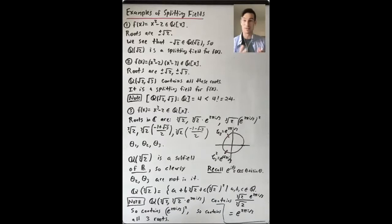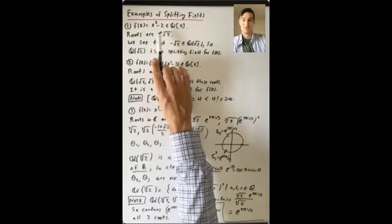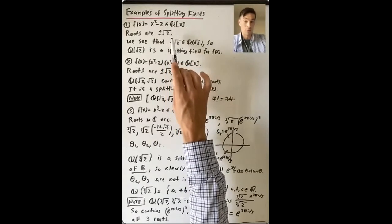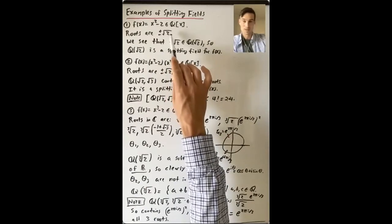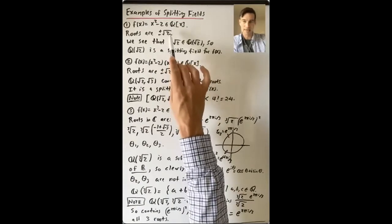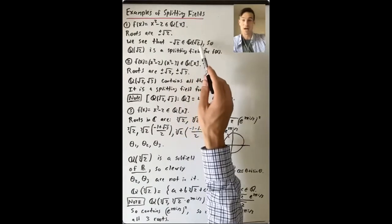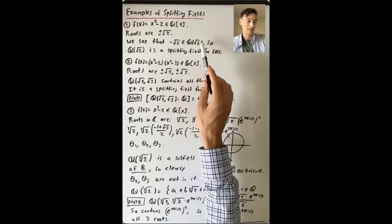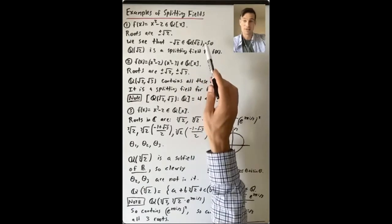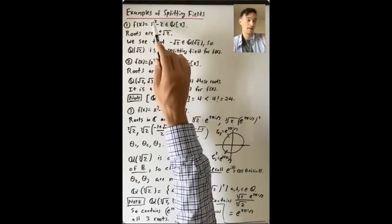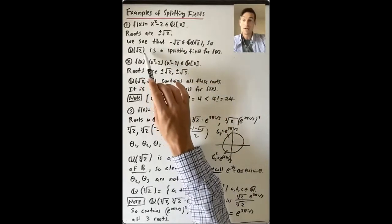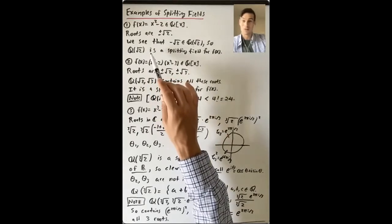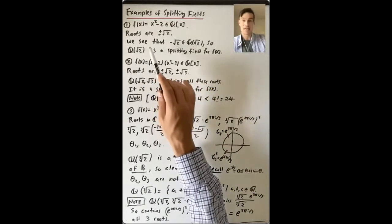In this video, I want to talk about some examples of splitting fields. Let's start with a really easy example where we take a quadratic polynomial like x squared minus 2 in Q[x]. We know the roots in ℝ or ℂ: it's the positive square root of 2 and its negative. The field Q adjoin the positive square root of 2 contains both roots since it's a field and contains negative 1 times √2. So Q(√2) is a splitting field for f(x) — the polynomial splits into linear factors there, and no proper subfield accomplishes this.